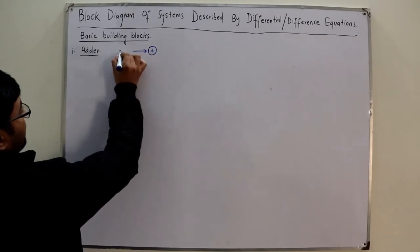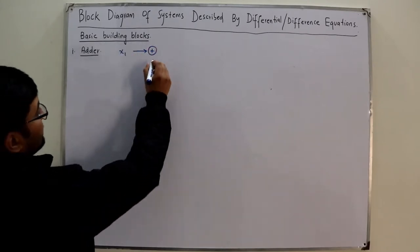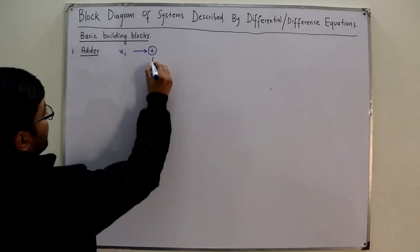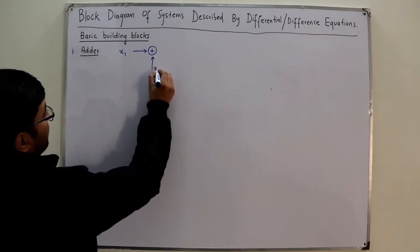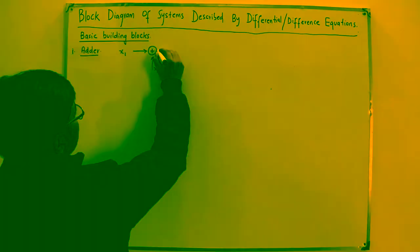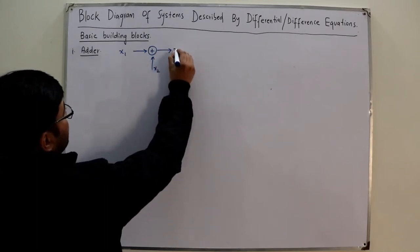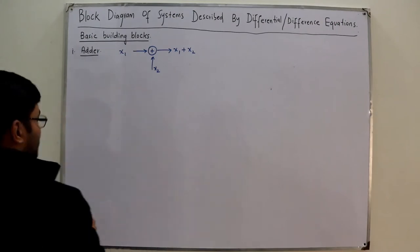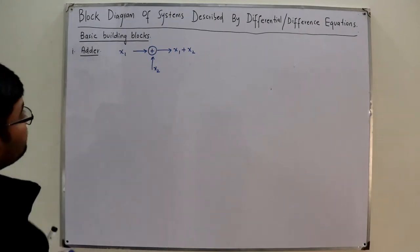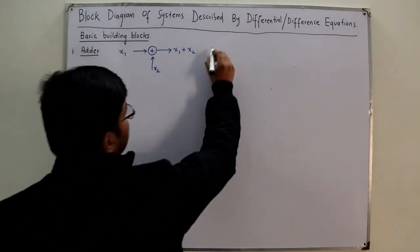The adder is represented by a plus sign encircled. It is given one input x1 and another input x2 — it can take multiple inputs, but we start with two. The output of the adder is x1 plus x2. This is the first basic building block.